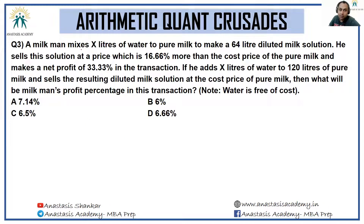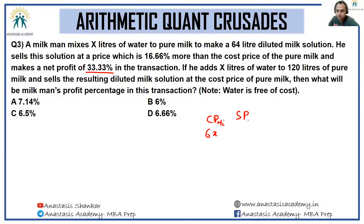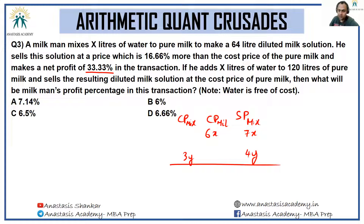Next: a milkman mixes x liters of water to pure milk to make a 64-liter diluted solution. He sells at 16.66% more than the cost price of pure milk and makes a net profit of 33.33%. Let the cost price of milk be 6x, so selling price is 7x. For a profit of 33.33%, if cost price of mixture is 3y, selling price is 4y.